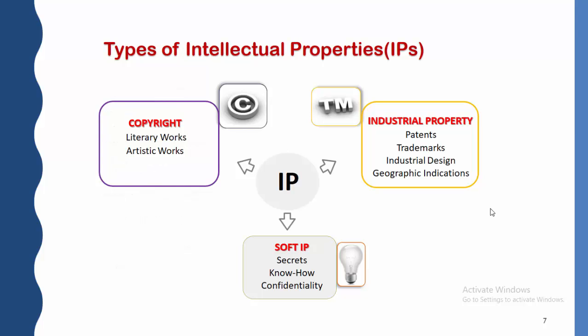Now let's move to the types of intellectual property. Intellectual properties are classified into two main categories, plus one additional: copyright, industrial property, and soft IP. Copyright includes literary work and artistic work. Industrial property includes patents, trademarks, industrial designs, and geographical indications. Soft IP includes secrets of confidentiality of a company or organization. Let's see each one by one.